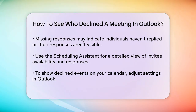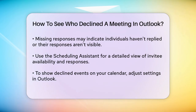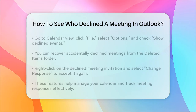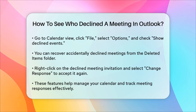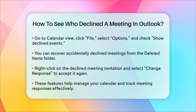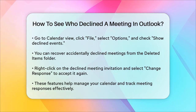To ensure you don't miss any declined meetings in the future, you can also configure Outlook to show declined events on your calendar. To do this, go to the calendar view, click the file tab, select options, and then choose calendar from the left sidebar. In the calendar options section, check the box next to show declined events on your calendar. This way, you'll be able to see all the meetings you've declined without them cluttering your calendar.